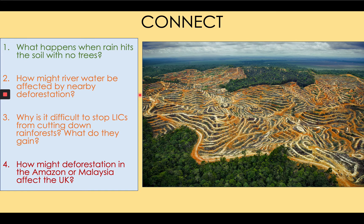4. How might deforestation in the Amazon or Malaysia affect the UK? Now that is a harder question. Well, if you recognise that rainforests are carbon sinks — they absorb carbon dioxide — then you'll know that if you reduce the amount of rainforest, you increase the amount of CO2 in the atmosphere, so you increase the strength of the greenhouse effect, causing global warming and climate change, leading to stronger storms in the UK, more likely flooding, more heat waves. In this lesson, you're going to understand two key questions: what are the negative impacts of deforestation in Malaysia and other rainforests, and what are the positives — in other words, why does it happen?